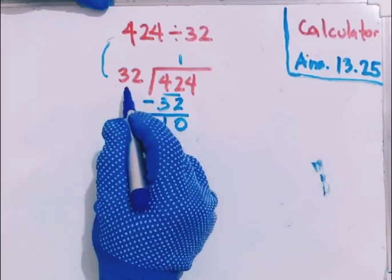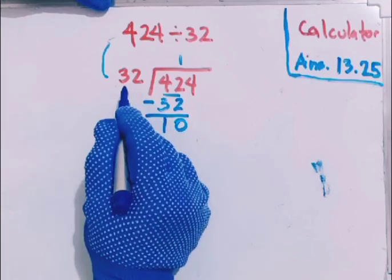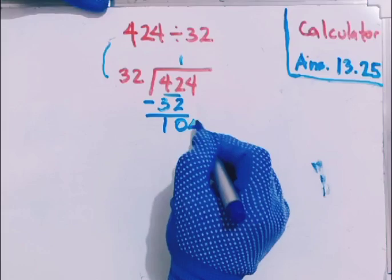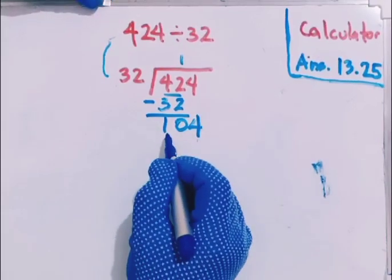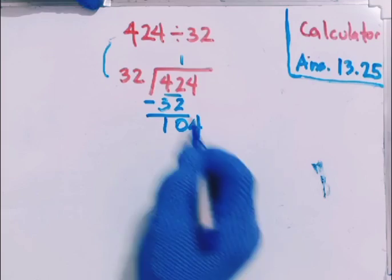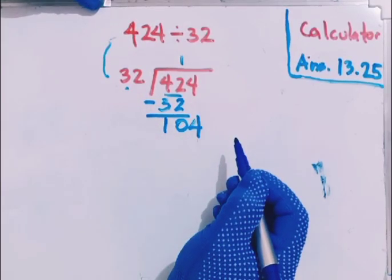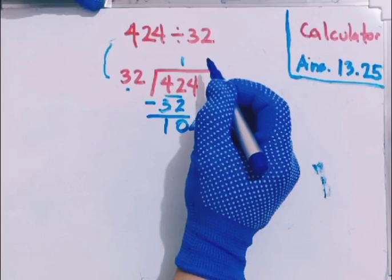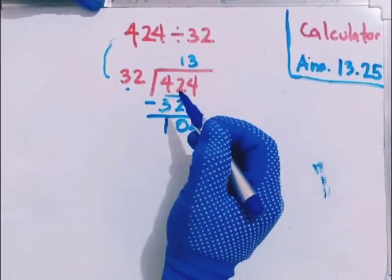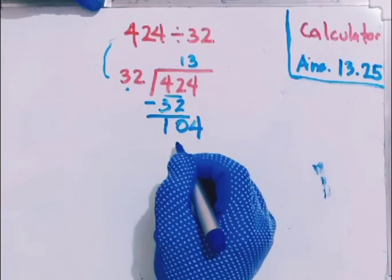10 divided by 32, can it be? No, because 10 again is lower than 32. Therefore we have to bring down the 4. Now we have 104. 104 divided by 32, can it be? Yes. So 104 divided by 32, that is 3. 3 times 32 will be 96.